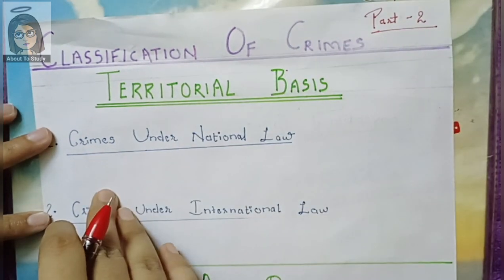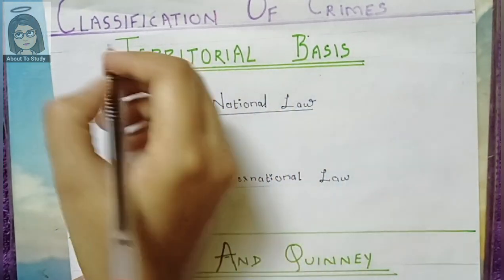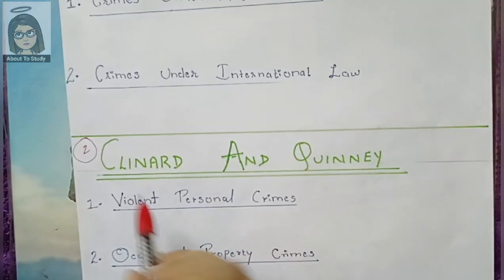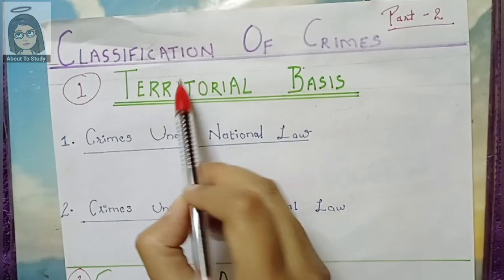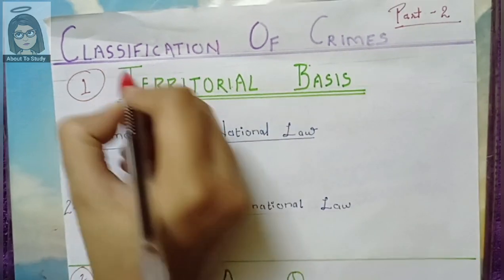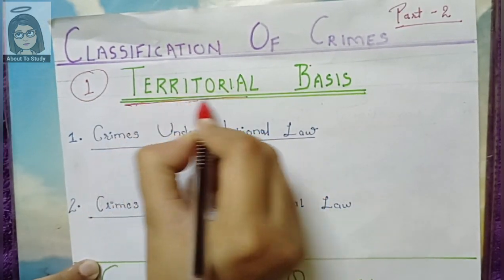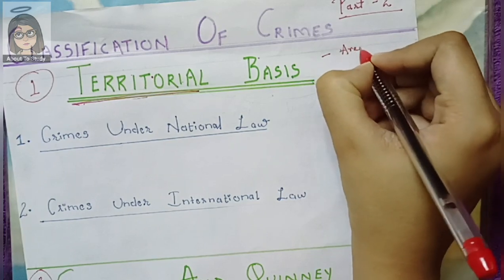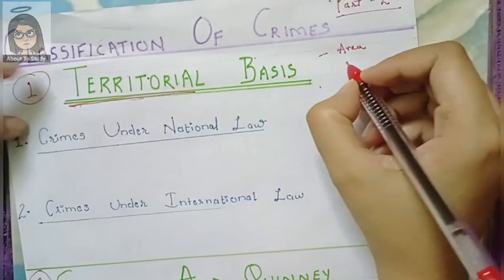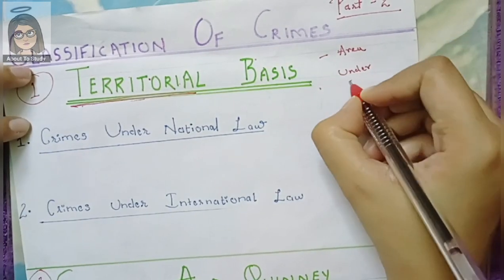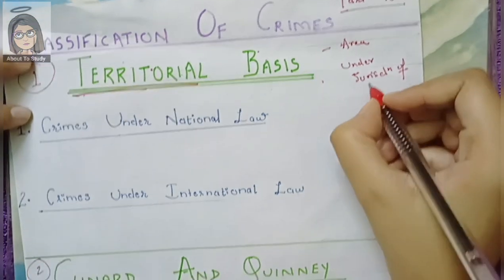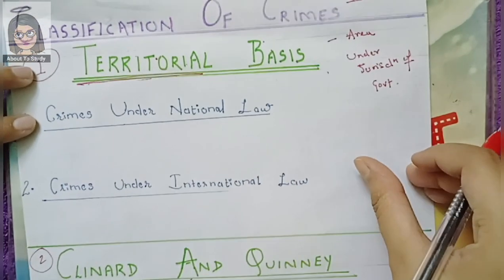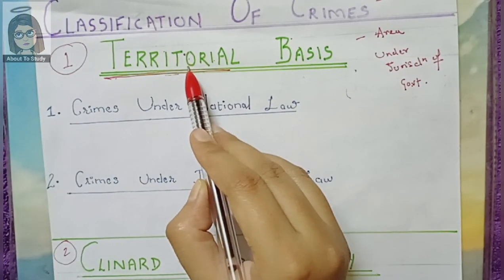On which basis? On the first one — on the territorial basis. The second one is the classification of crime. So let's see on the first one, the classification of crime. But you have to know what is a territory. The word territory is a geographical term — the geographical area which is under the jurisdiction of a government, the line of control of a government. Under the jurisdiction of government is known as a territory.